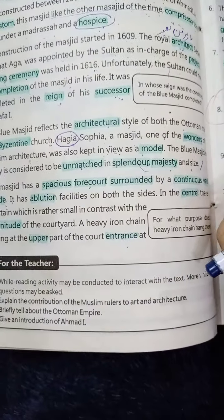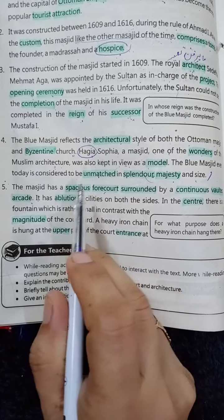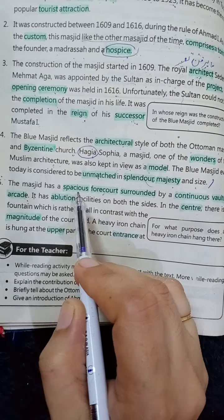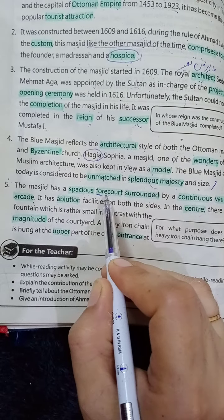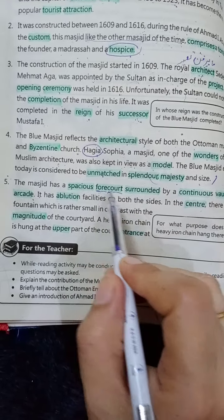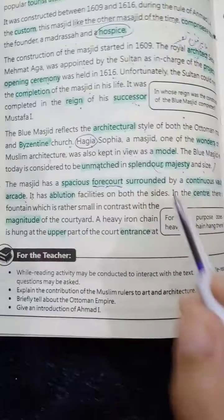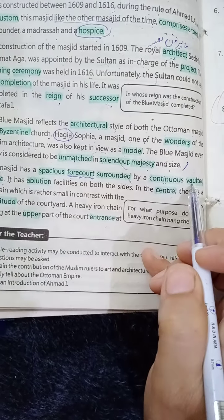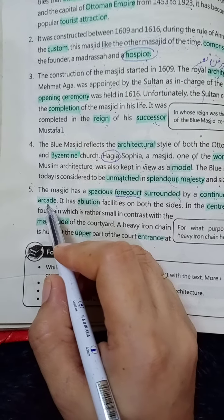Paragraph number 5: 'The masjid has a spacious four-court surrounded by a continuous vaulted arcade.' The masjid has a spacious — ایک وسیع یا کشادہ — four-court. Four کا مطلب ہے سامنے اور court کا مطلب ہے سہن، تو سامنے والا سہن۔ Masjid کے سامنے والا سہن وسیع یا کشادہ ہے۔ Surrounded by — جو گھیرا ہوا ہے — a continuous — ایک مسلسل — vaulted — مہرابی — arcade — رہداری — means گزرنے کی جگہ۔